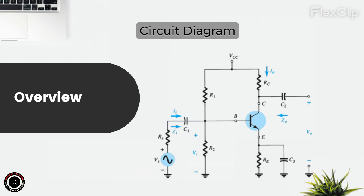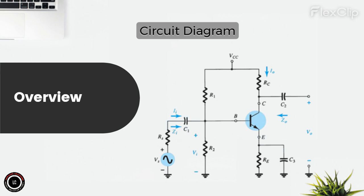Here are the different portions of a CE amplifier and their functionality. Input stage — base emitter junction: the input signal is applied to the base emitter junction of the transistor. This junction is forward biased, allowing the input AC signal to modulate the base current. Biasing resistors R1 and R2: these resistors form a voltage divider network, providing the appropriate biasing voltage to the base emitter junction. They stabilize the operating point and ensure the transistor remains in the active region.